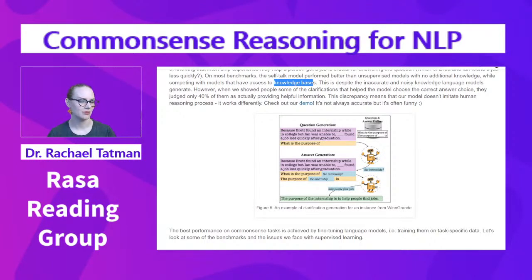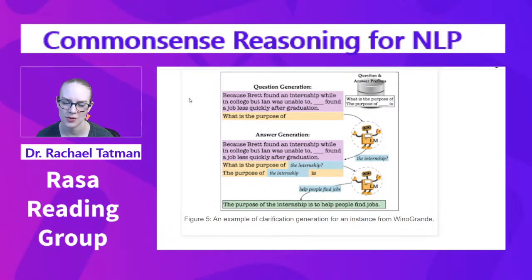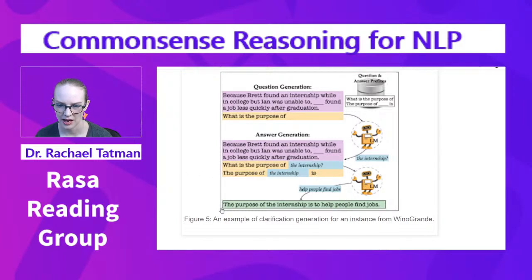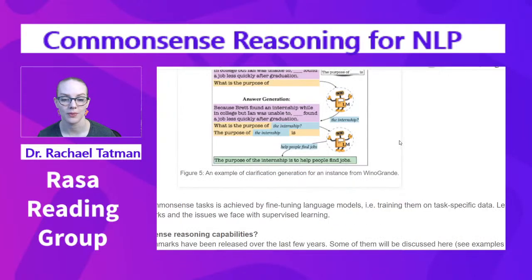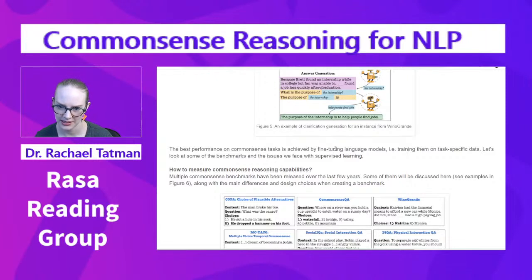This is despite the inaccurate and noisy knowledge language models generate. However, when researchers showed people clarifications that helped the model choose the correct answer, only 40% were judged as actually providing helpful information. This discrepancy means the model doesn't imitate human reasoning — it works differently. The figure illustrates: the question generation prefix 'what is the purpose of blank' leads the language model to generate 'the purpose of the internship is to help people find jobs,' and this clarification makes answering the main question more successful.